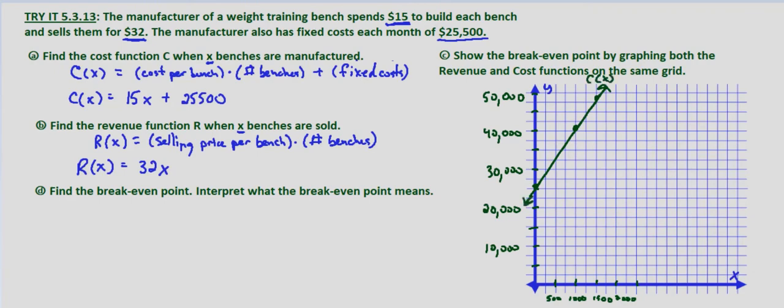I'll use a different color for our revenue function, R of X. In this case, we're just looking at $32X. So at $1,000, we're going to be at $32,000. So if this is $35,000, at $1,000 we're going to be at $32,000, which would be right about here.